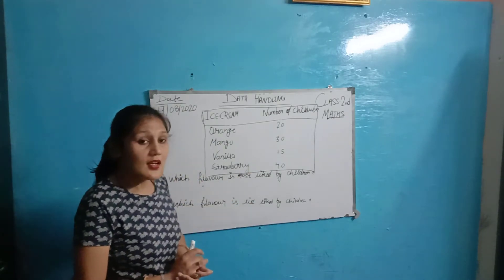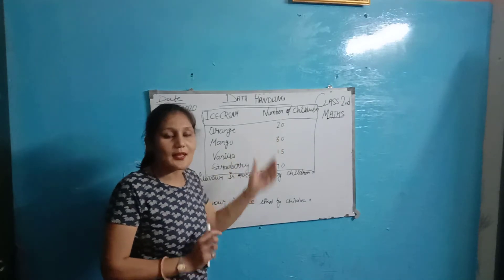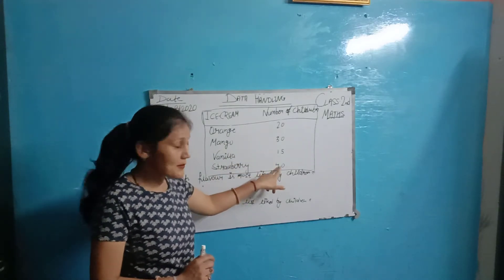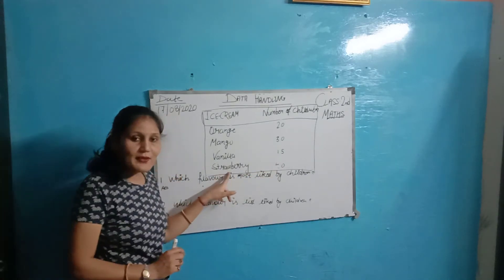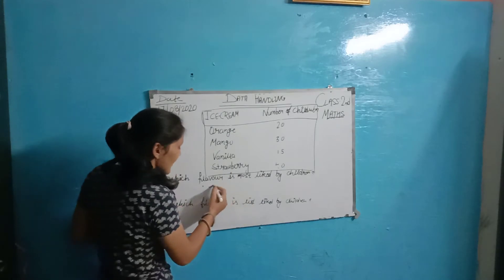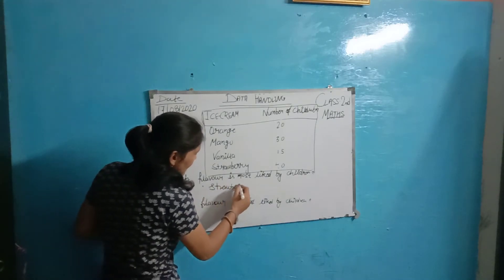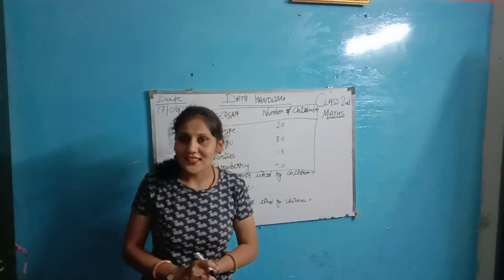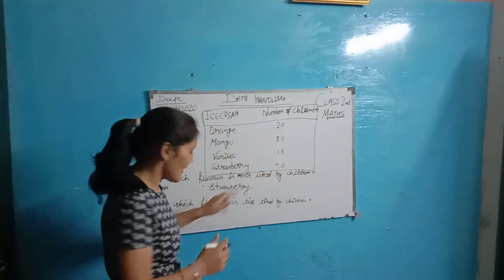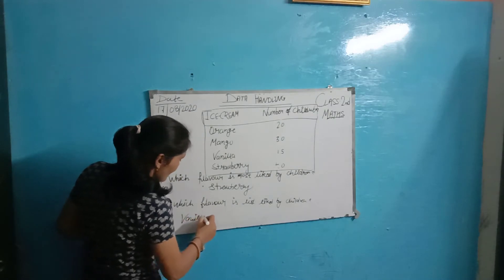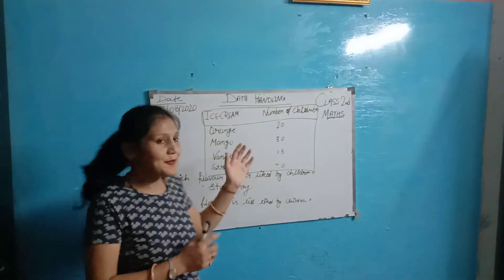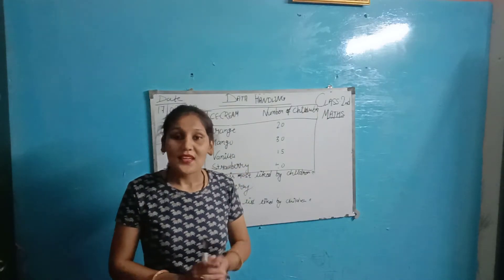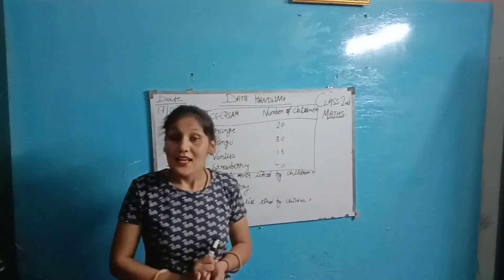Which flavor is most liked by children? Looking at the numbers: orange 20, mango 30, vanilla 50, and strawberry 40. Vanilla has the highest number, so vanilla is the most liked flavor. The smallest number is orange with 20. If I ask you which is the best thing you like — orange, mango, vanilla, or strawberry — I like strawberry ice cream.